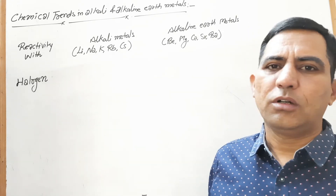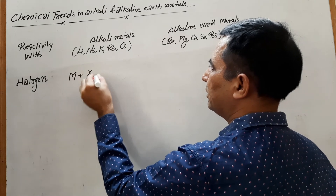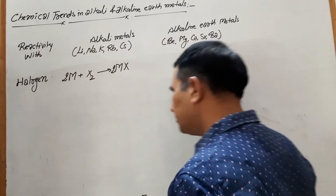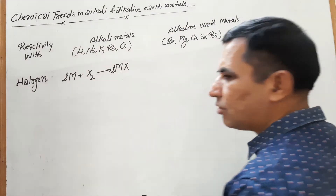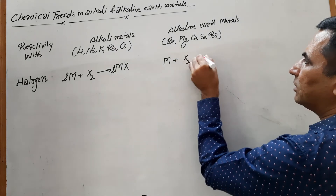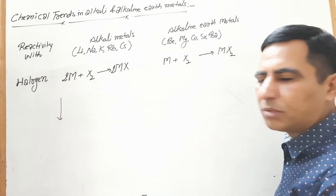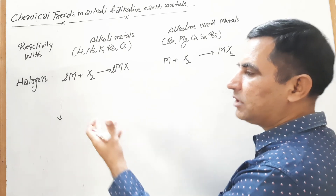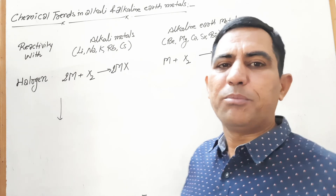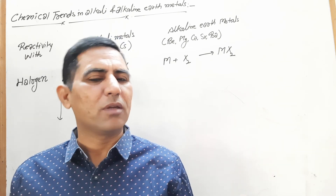Now we look at reactivity with halogens. All the alkali metals react with halogens and form corresponding MX type halides. On the other hand, alkaline earth metals also react with halogens, but at elevated temperatures, forming MX₂ type halides. When we move from top to bottom, the reactivity of these metals always increases because ionization enthalpy decreases — bigger elements easily lose their electrons, showing more electropositive nature and reacting more readily with halogens.